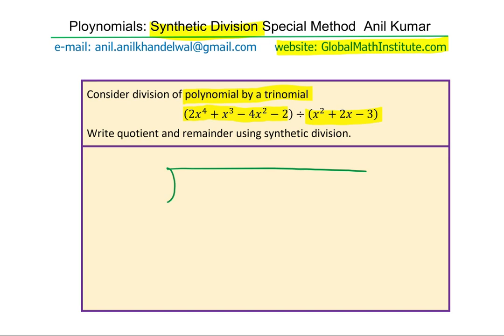Let me write down the divisor x square plus 2x minus 3 outside. And the dividend, you can also write down as x to the power of 4 plus x cube minus 4x square. You notice that the x term is missing and therefore, we need to put a placeholder 0x and then minus 2. This is a very critical step. It helps to align. Now, let us begin with the division part. X square will go two times in x to the power of 4, and therefore, in the quotient, I can write 2x square.